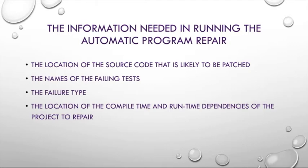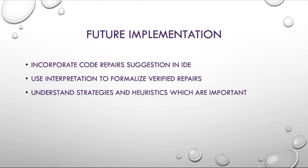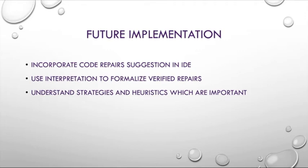For future implementation, the IDE should not only report semantic errors at design time but also suggest code repairs. If the IDE can suggest code repairs at runtime, it will be very useful for developers to get bugs fixed easily. We could also use abstract interpretation to formalize the concept of a verified repair — one that removes bad runs while possibly including good runs. There are many software repair techniques available, but there is no clear picture of findings, often due to a mix of innovations, so we need clarity on which strategy and heuristics are best suited.